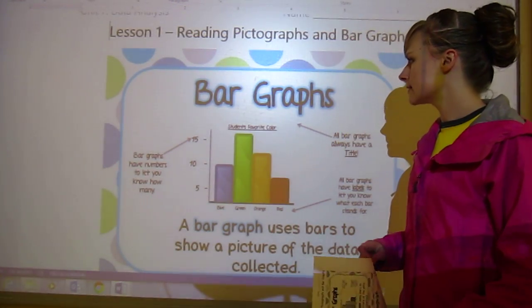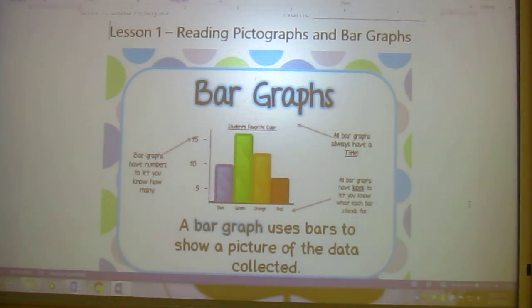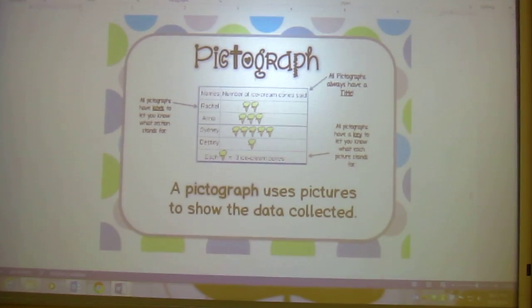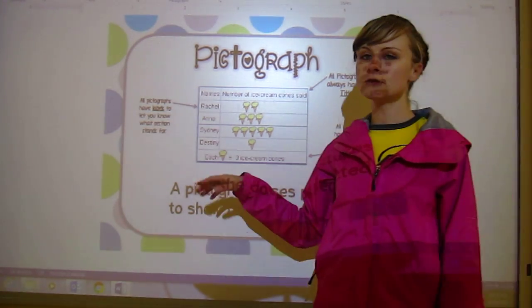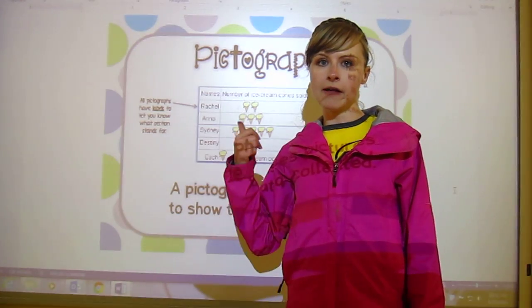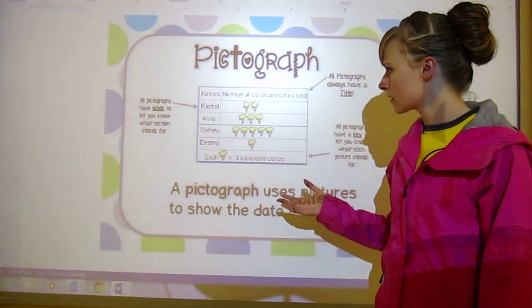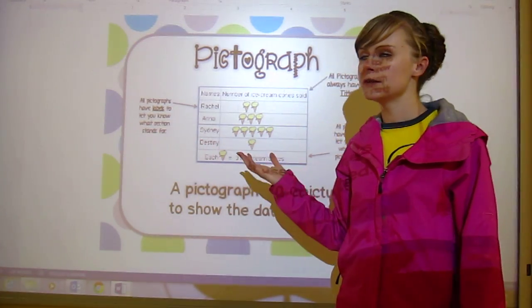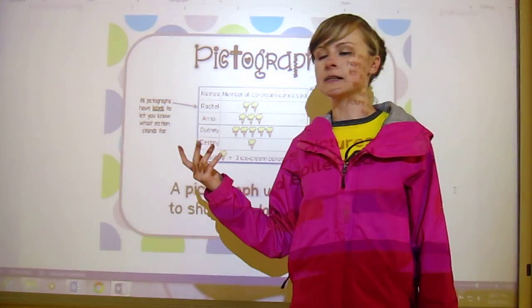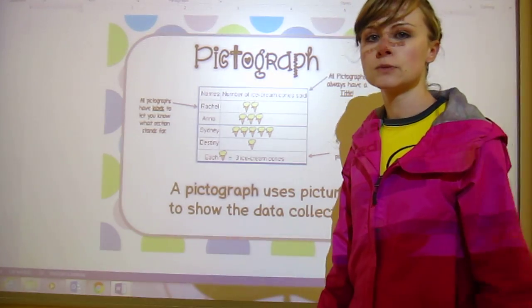So that's a bar graph. And if we go down we've got pictograph. A pictograph uses pictures to show the data collected. So it goes one step further with the visual. The bar graph is to show visual, the pictograph gives you a visual but it also uses pictures as well. It's just a little bit of a different way you could display the same data on either graph and it would work.